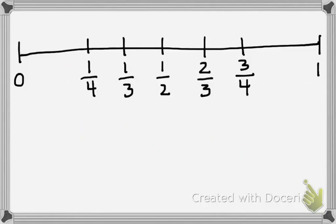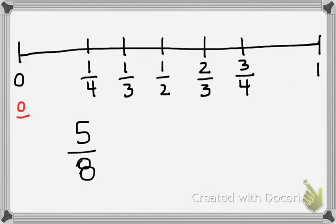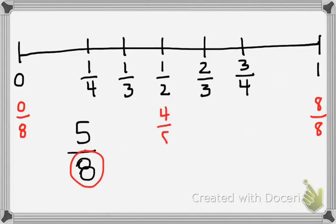Now let's say I want to place the fraction 5-eighths on my number line. When working with fractions with a denominator of 8, I know that zero is 0-eighths and one is 8-eighths. I also know that one-half is 4-eighths, so I know that 5-eighths is going to fall somewhere above the halfway point.